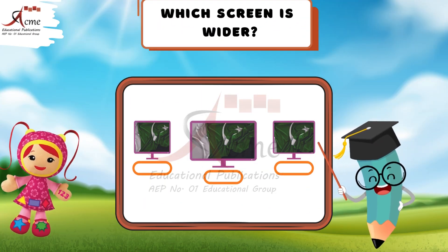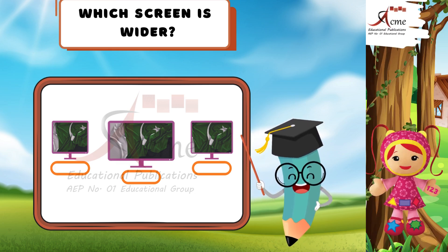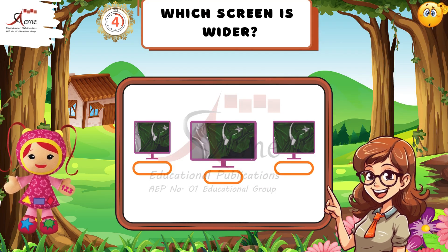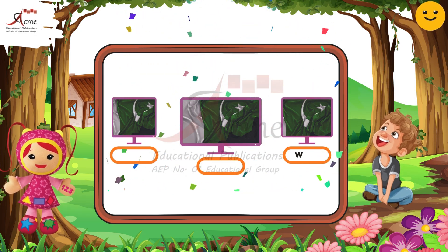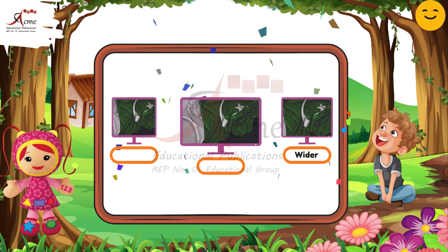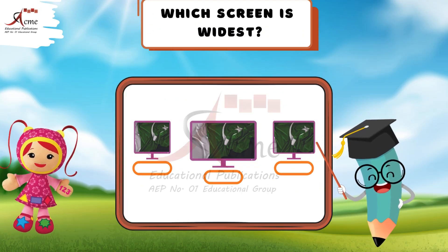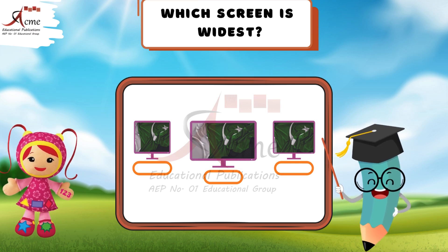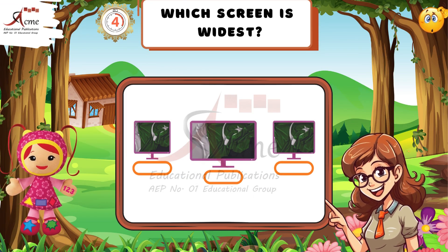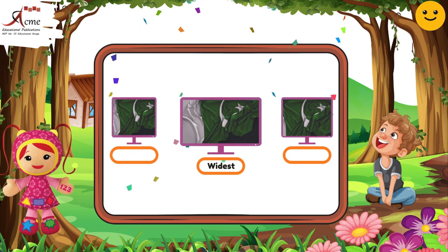Now, look at the screens again. Can you guess which screen is wider? Correct. The third screen is wider. Finally, look at the screens. Can you guess which screen is widest? Yes. The second screen is widest.